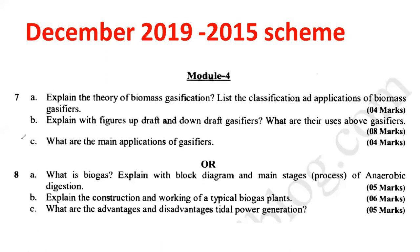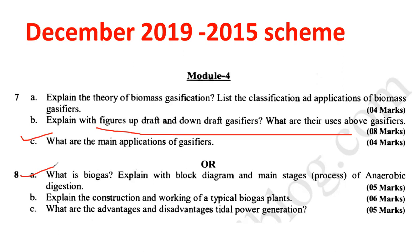Also from module 4: what are the major applications of gasifiers? Explain the meaning of updraft and downdraft gasifiers. What is biogas? Biogas is an end product derived from biomass. There are different processes for the conversion of biomass into biogas: one is anaerobic digestion, another is pyrolysis. Pyrolysis means biomass is converted into different other kinds of products.